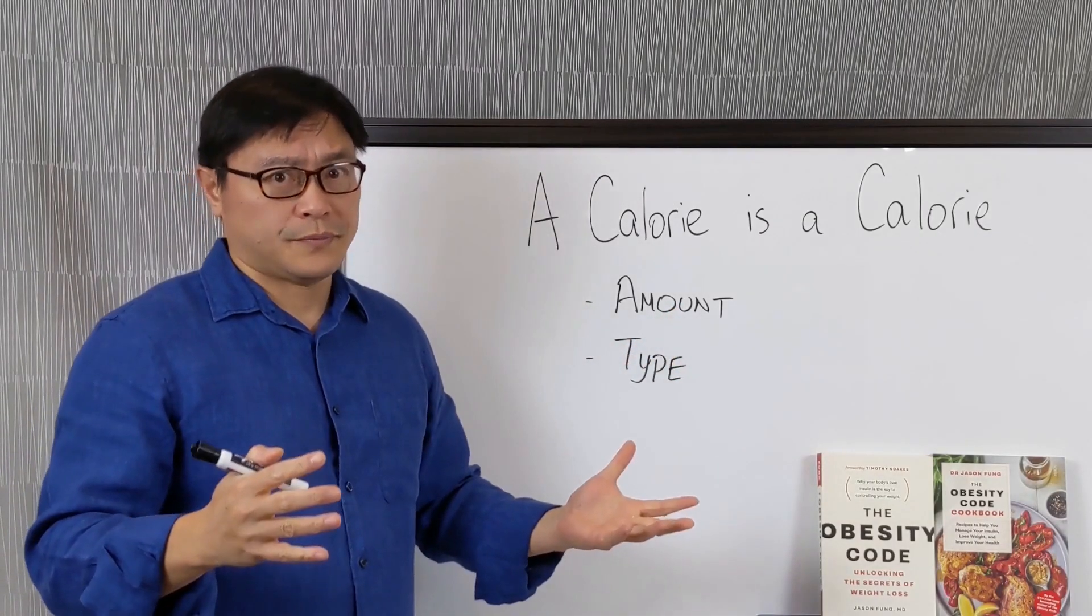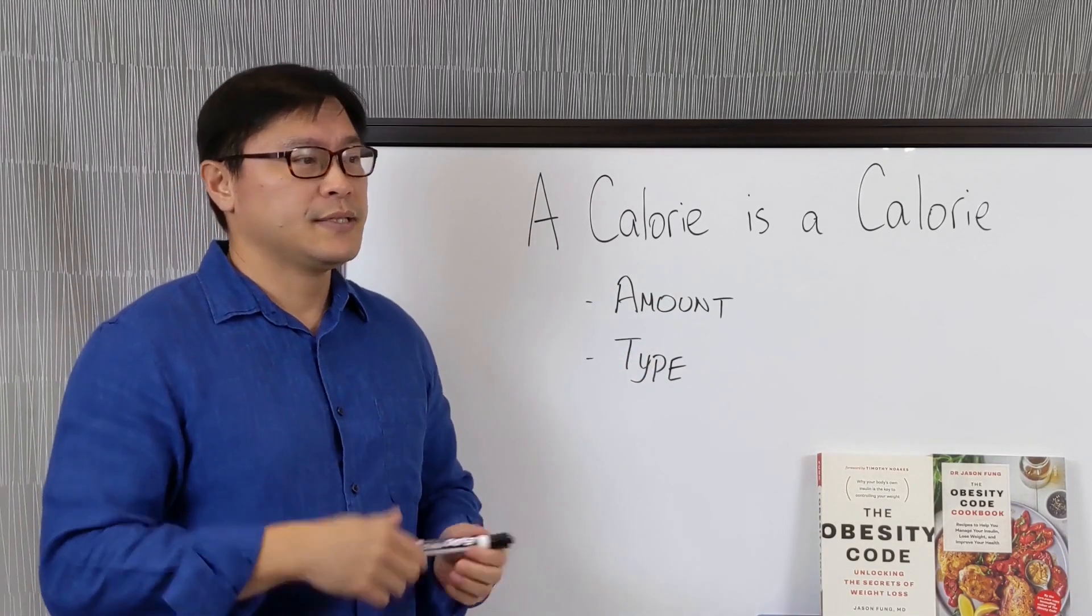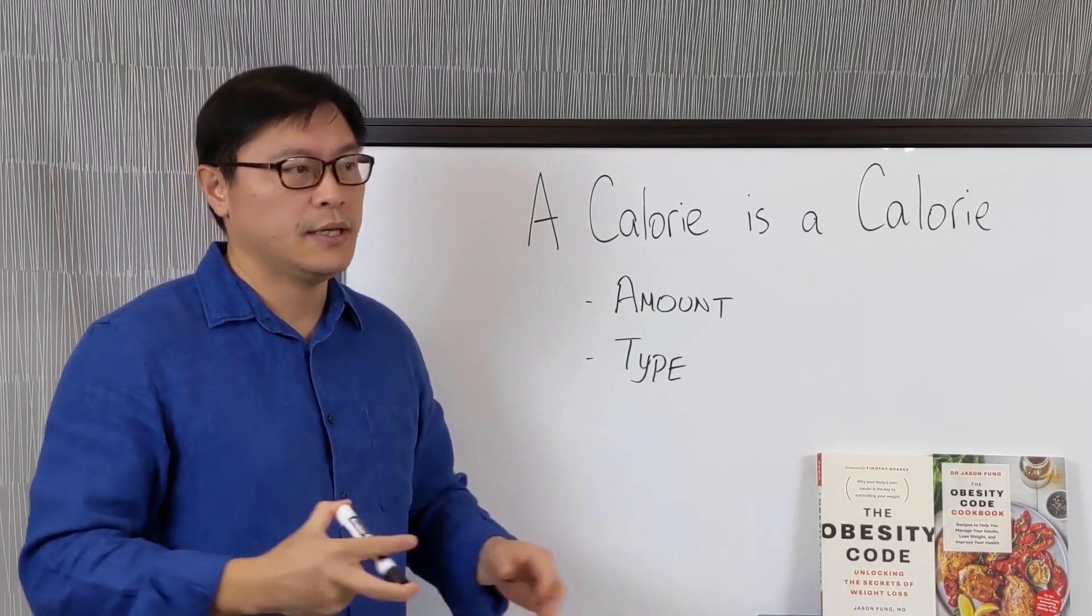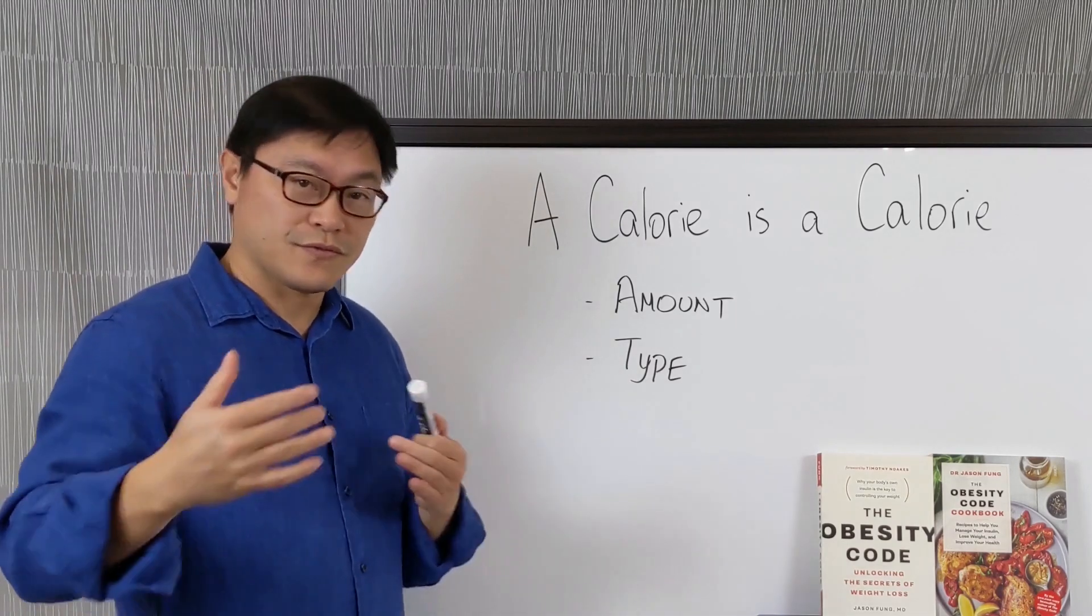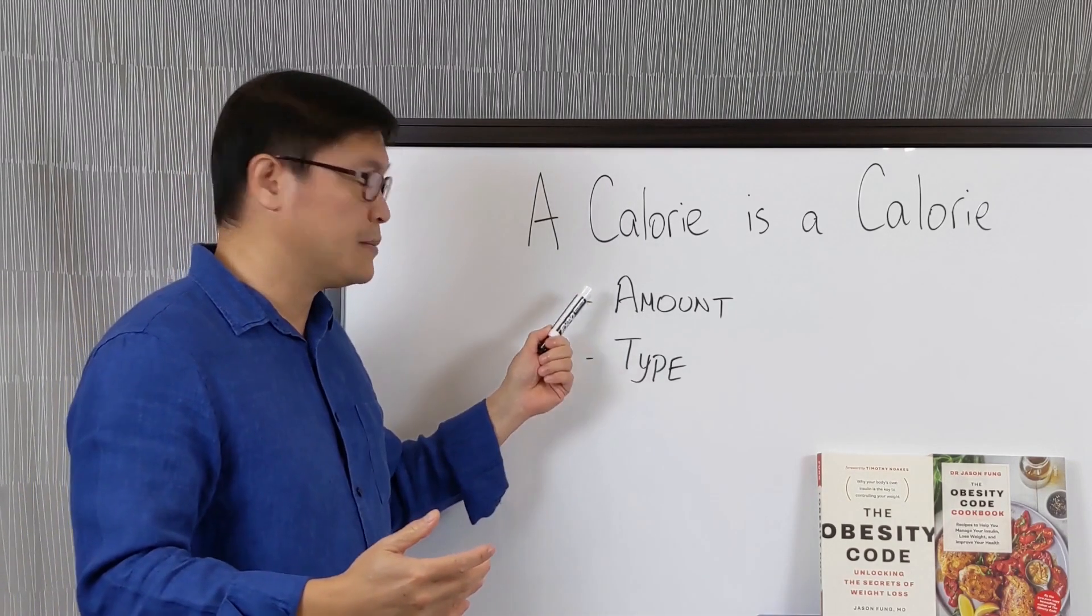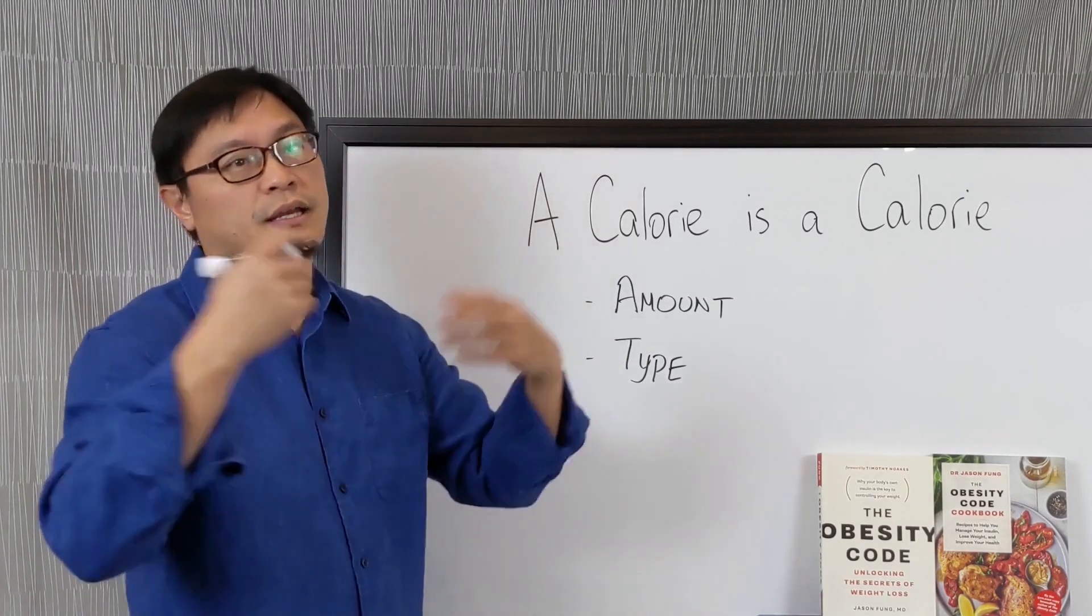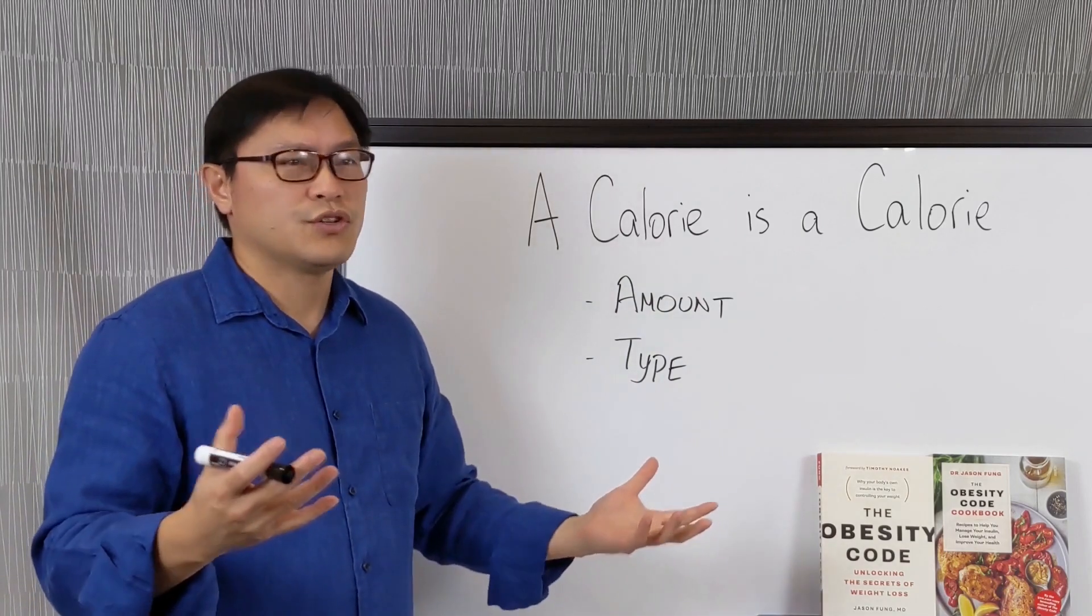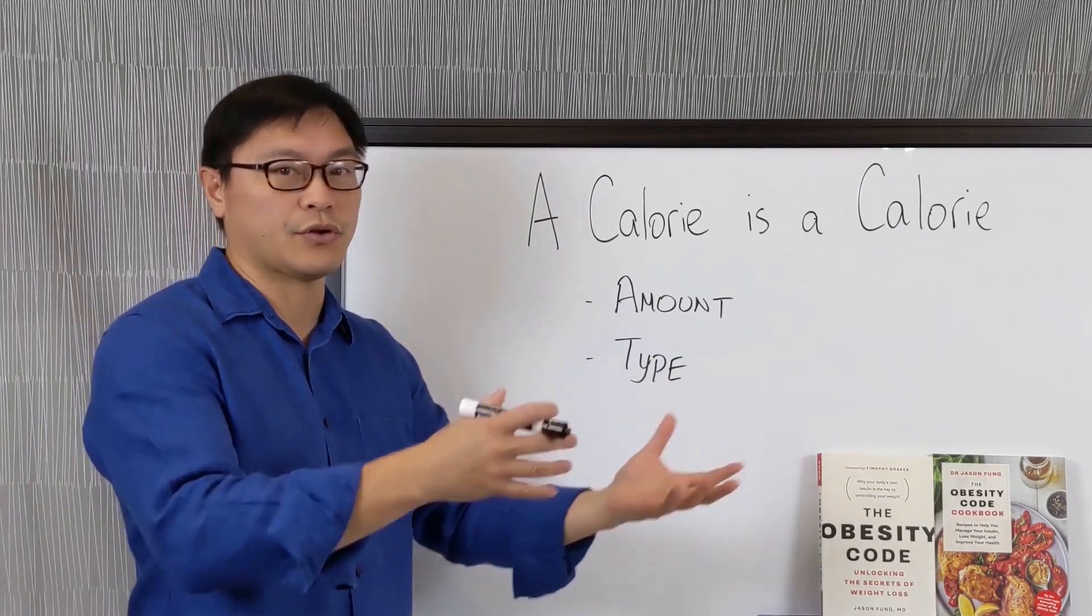So we've all heard this before. People tell you, a calorie is a calorie, right? And it seems so simple, so intuitive. And what they really mean is that the only thing that matters in terms of gaining or losing weight is the amount of calories and not the type of calories. So they say a calorie is a calorie because it sounds so simple and true, just like a dog is a dog or a cat is a cat or a dollar is a dollar.